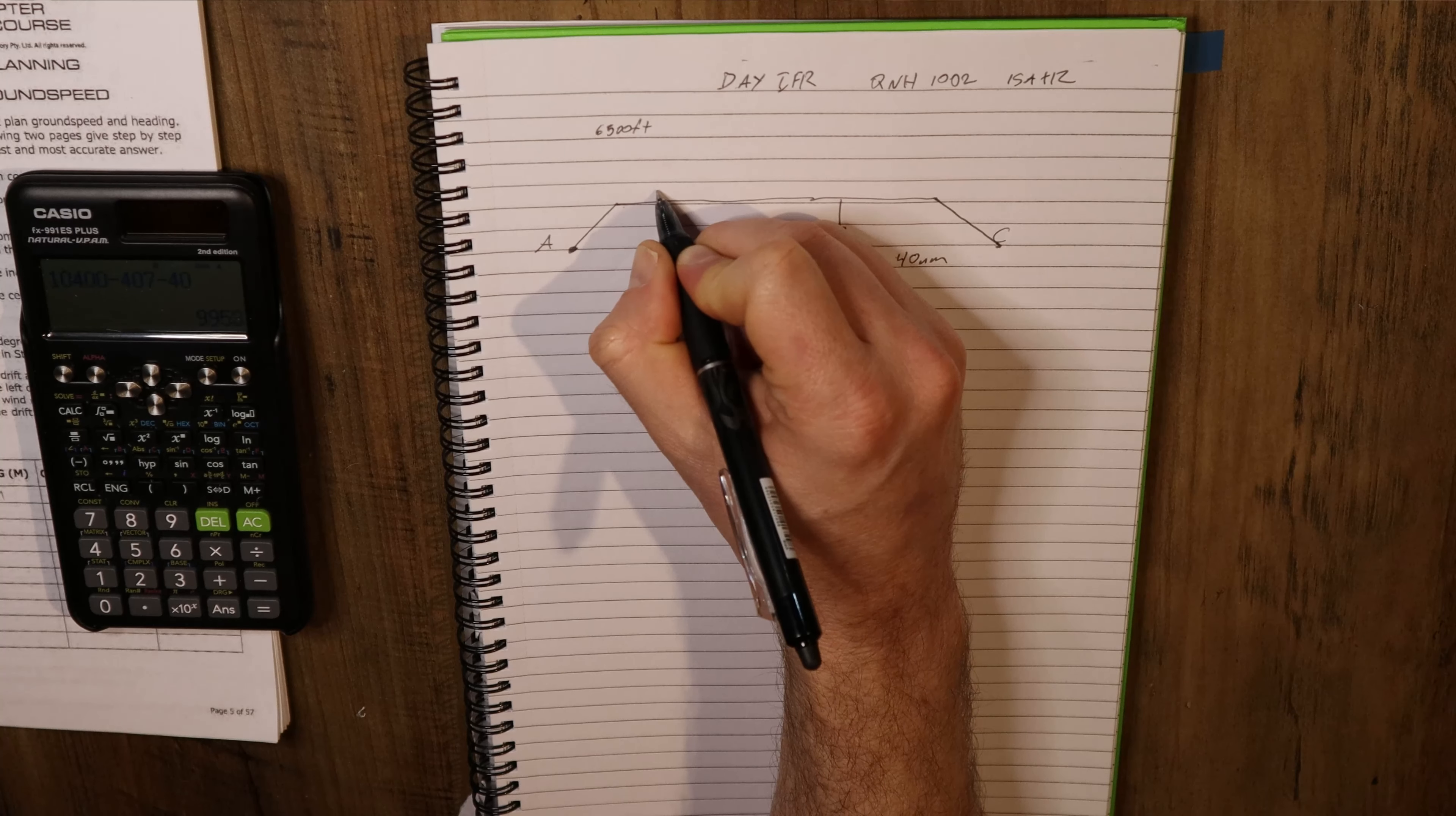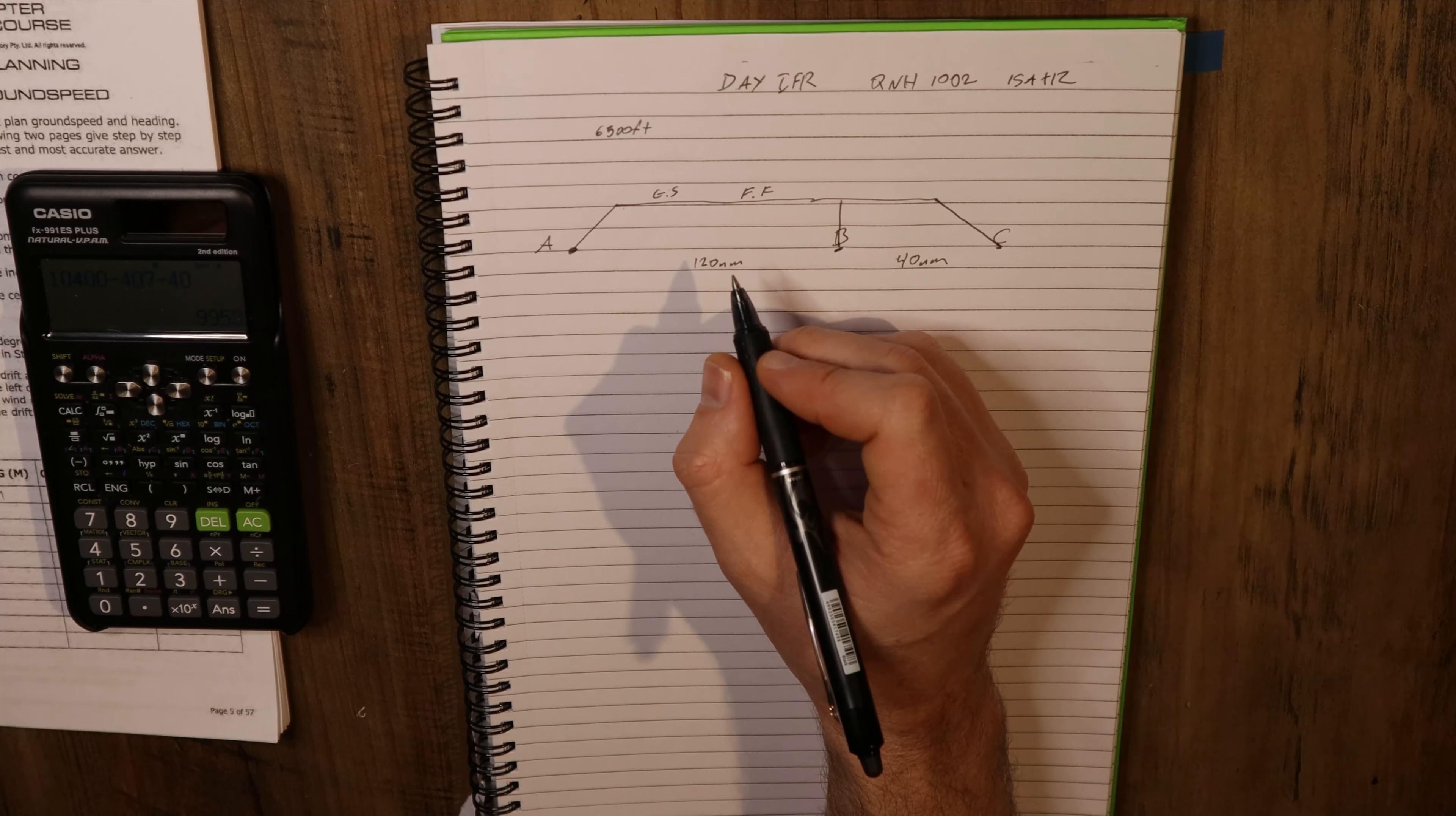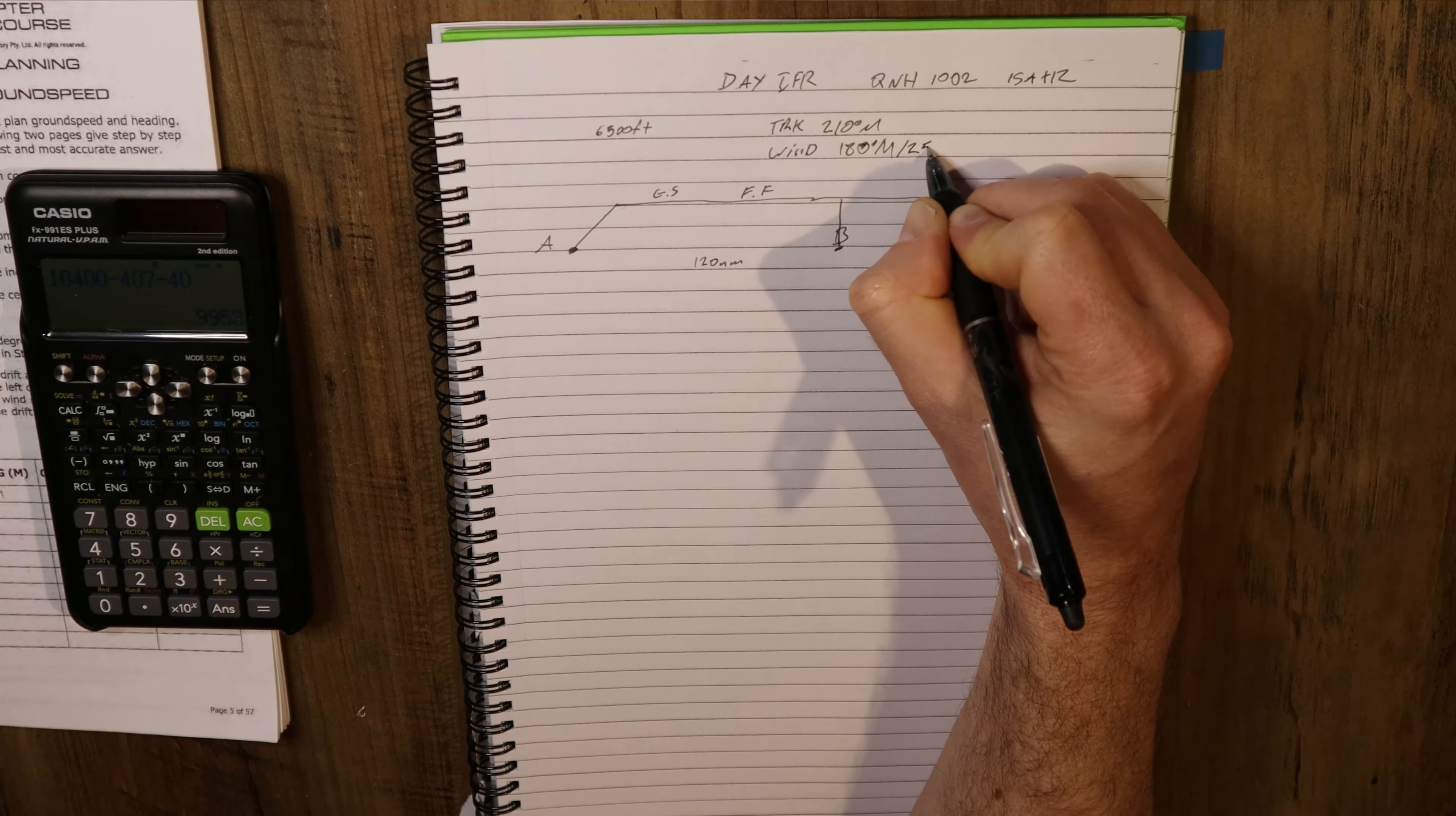The reason I write it way up there is because I'm going to work down to work out my DA based on this information here. The other things that I like to write here are ground speed and fuel flow. For some multi-legs that have different winds or different altitudes, I would probably write the ground speed and fuel flow for every leg. But we're assuming from B to C is going to be the same as A to B. Track 210 degrees magnetic, wind 180 degrees magnetic 25 knots.